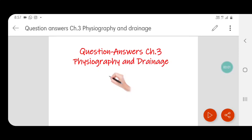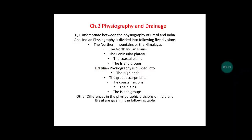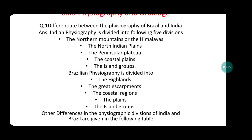Welcome children to Geography with Juliana. Today I am discussing the question answers of Chapter 3, Physiography and Drainage. The first question is: differentiate between the physiography of Brazil and India.